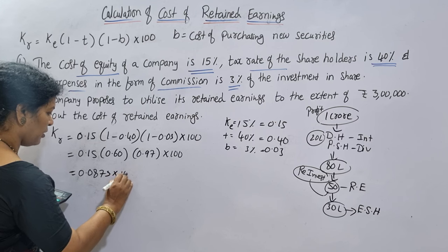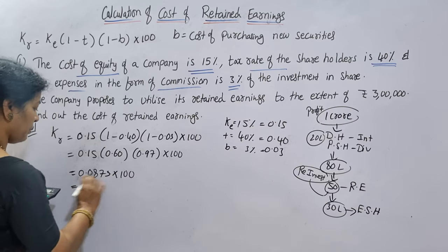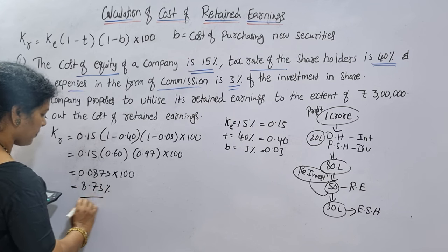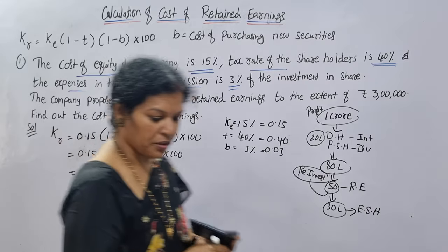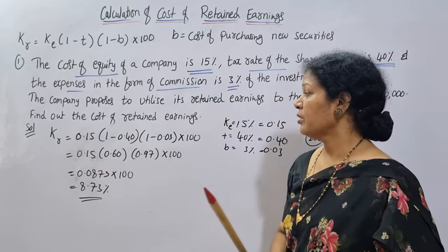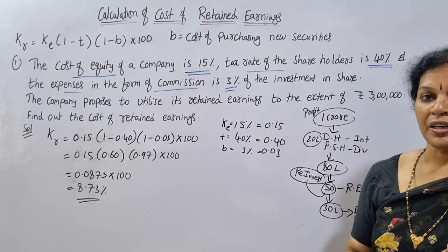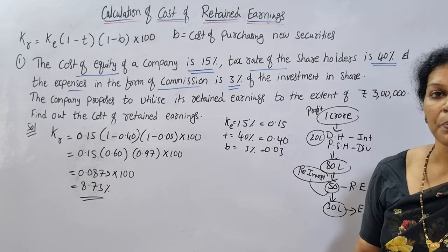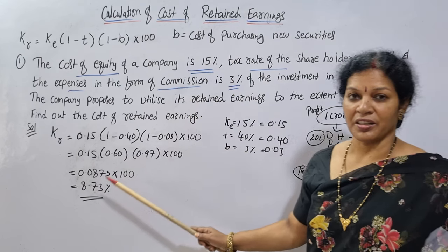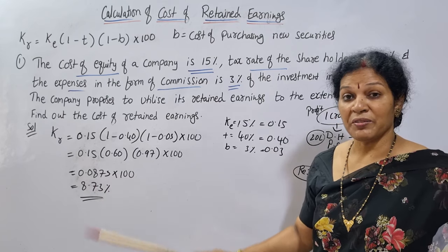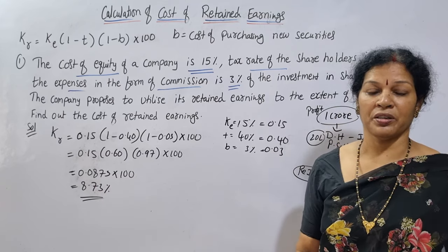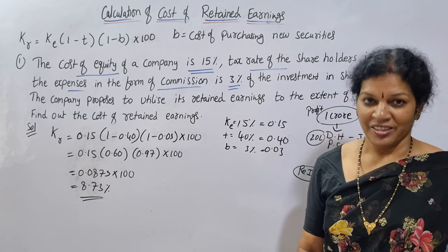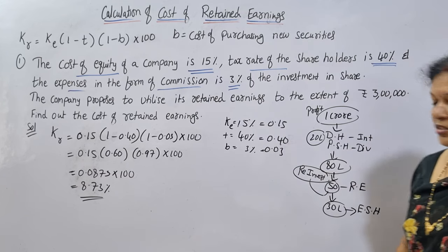If you multiply it by 100, you will get 8.73%. The cost of retained earnings is 8.73%. For a large company, this is the issue of retained earnings. The cost of equity capital will be 8.73%. Retained earnings will increase the cost of equity capital by 8.73%.